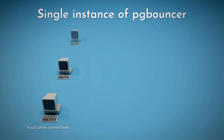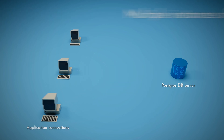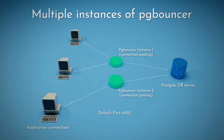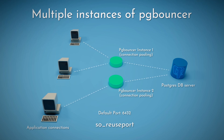In this diagram you can see that we are using one PG Bouncer instance — by default it runs on 6432, and applications are connecting to the DB server via this one instance. In the second diagram we have two instances of PG Bouncer and applications route connections to the Postgres DB server via both instances. This is enabled by a variable called soReusePort.